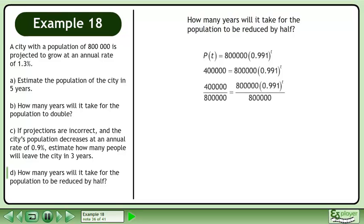Divide both sides by 800,000. This gives us 0.5 equals 0.991 raised to the power of t.